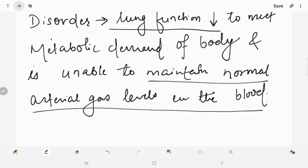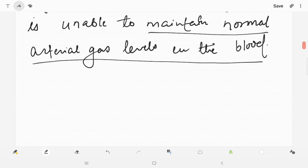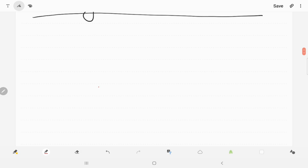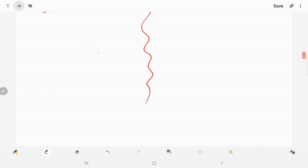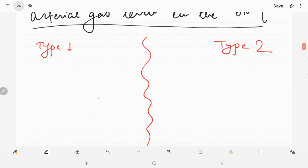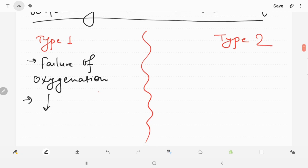So there are two types of respiratory failure: Type 1 and Type 2 respiratory failure. Let's take a look. In Type 1 respiratory failure, there is failure of oxygenation, characterized by a low partial pressure of oxygen with normal or low partial pressure of carbon dioxide.